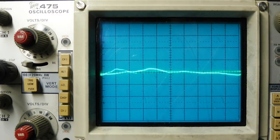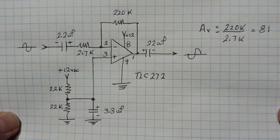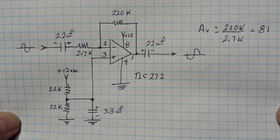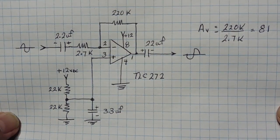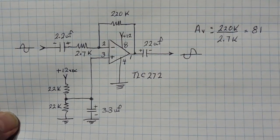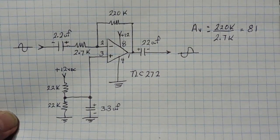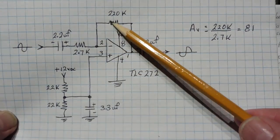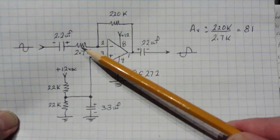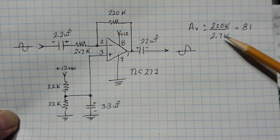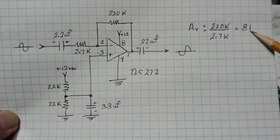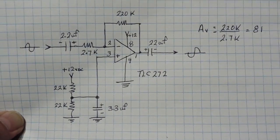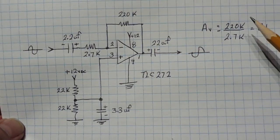Here's the schematic of the op amp circuit built on the breadboard — a simple inverting amplifier using a single supply. To set your desired gain, you only need to change two resistors: the feedback resistor and the input resistor. Their ratio gives you gain — in this case, 220K divided by 2.7K equals 81, so the gain is minus 81 because it's an inverting amplifier.